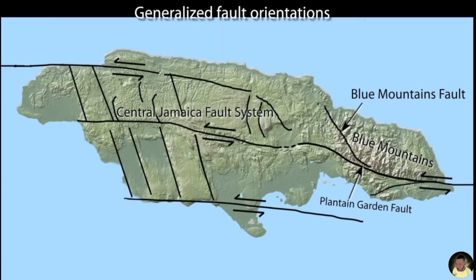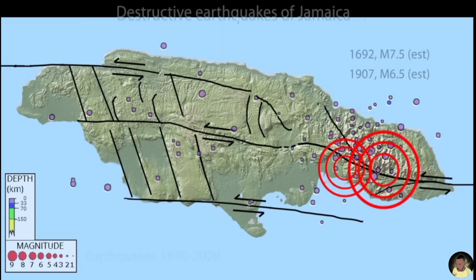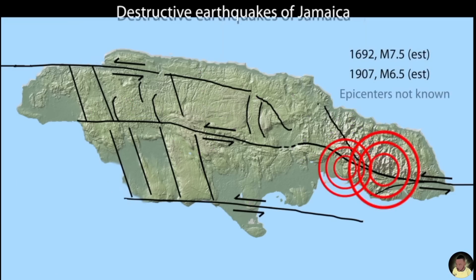Active faulting and recent seismicity are concentrated on the Plantain Garden and Blue Mountain faults in southeast Jamaica, and to a lesser extent along the central Jamaica fault system. Major destructive earthquakes occurred in 1692 and 1907, with epicenters not well located but occurring within or adjacent to eastern Jamaica.